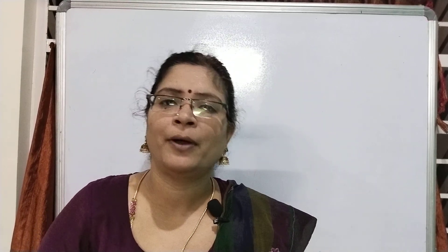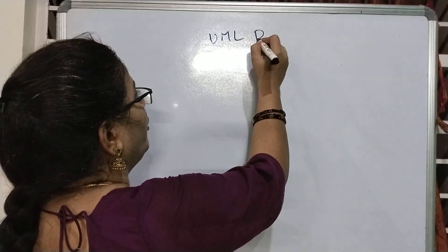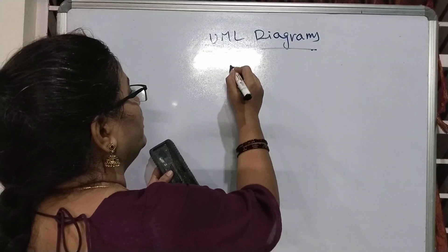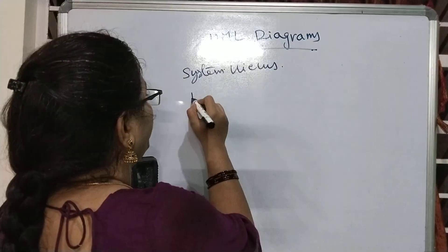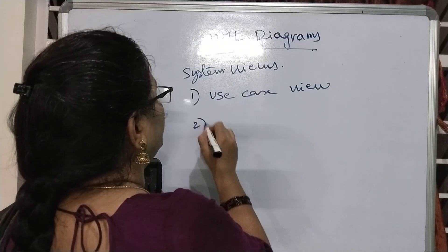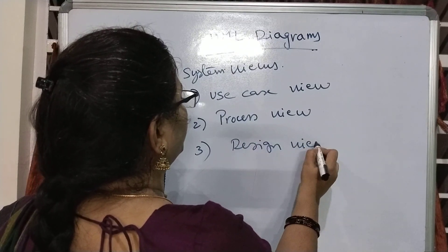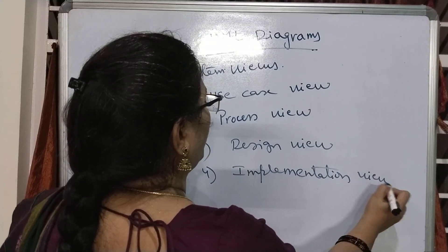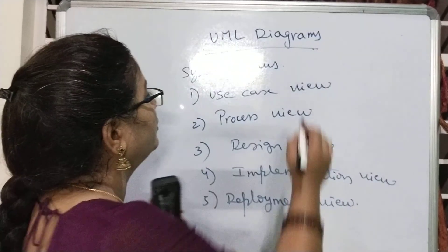Now we are going to discuss the theoretical part of UML — what are the various kinds of UML diagrams. Before that, I want to give clear information regarding the various kinds of views, also called system views. These system views are divided into: number one, use case view; number two, process view; number three, design view; number four, implementation view; and number five, deployment view.